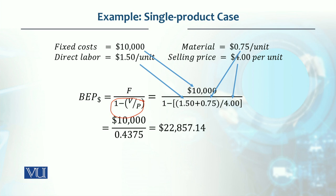This means if you generate this much revenue, you achieve your break-even point. One important thing to note: the variable cost, price, and fixed cost values you use determine the time basis of your result. If fixed cost is on an annual basis, the break-even point will be annual revenue. If fixed cost is on a weekly basis, then it gives you the weekly revenue needed to break even.